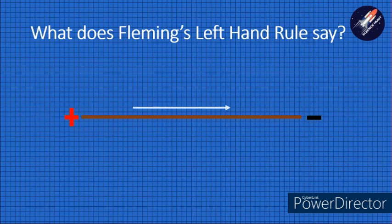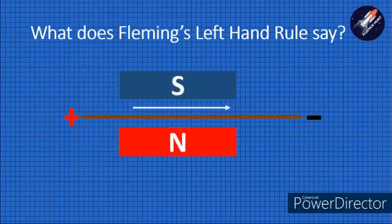That is, a force will be generated. As we see here, the conventional flow of current here is towards the right-hand side. Let's bring the permanent magnet. Here, we can see the direction of the magnetic field that is north to south is upwards.